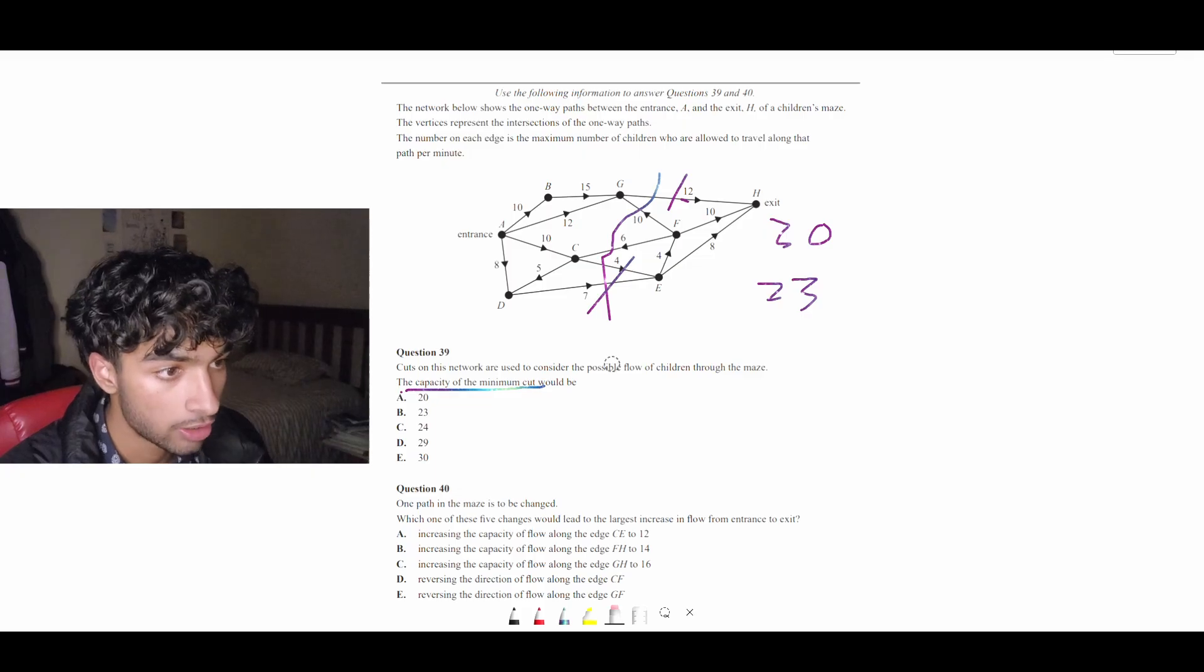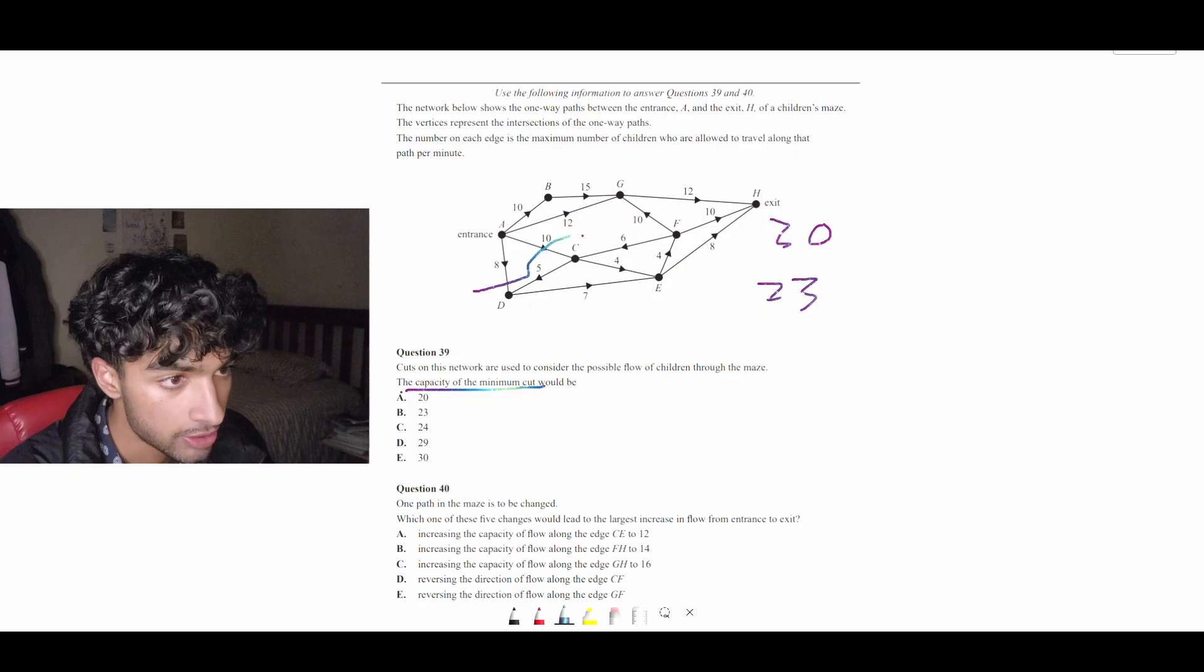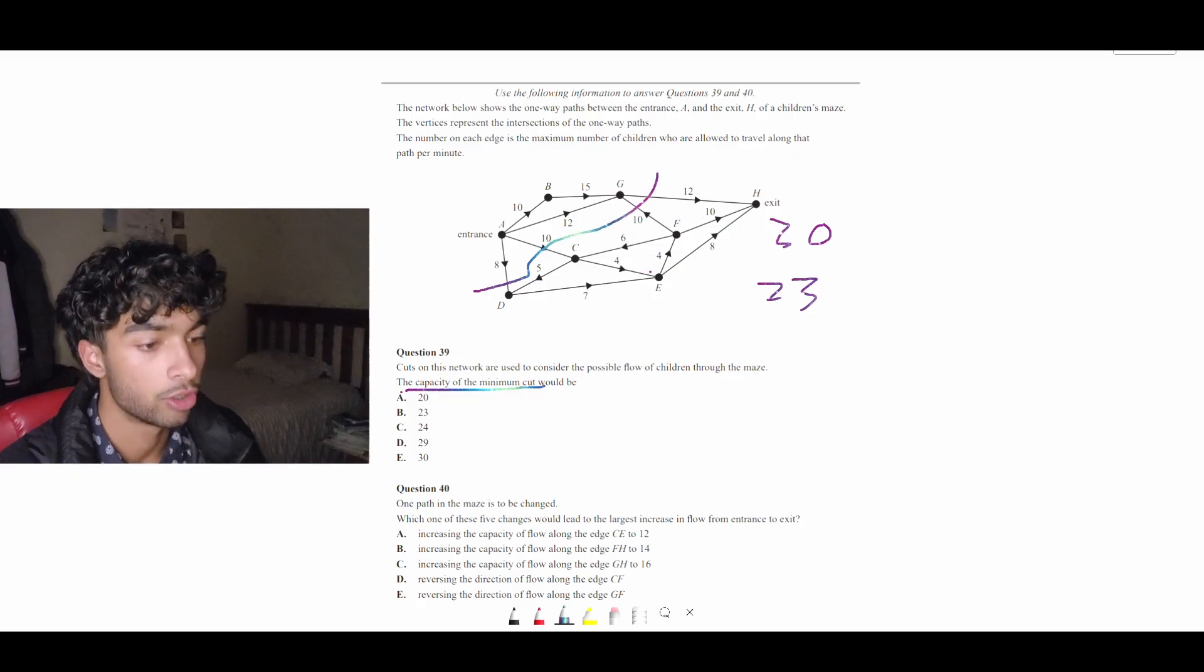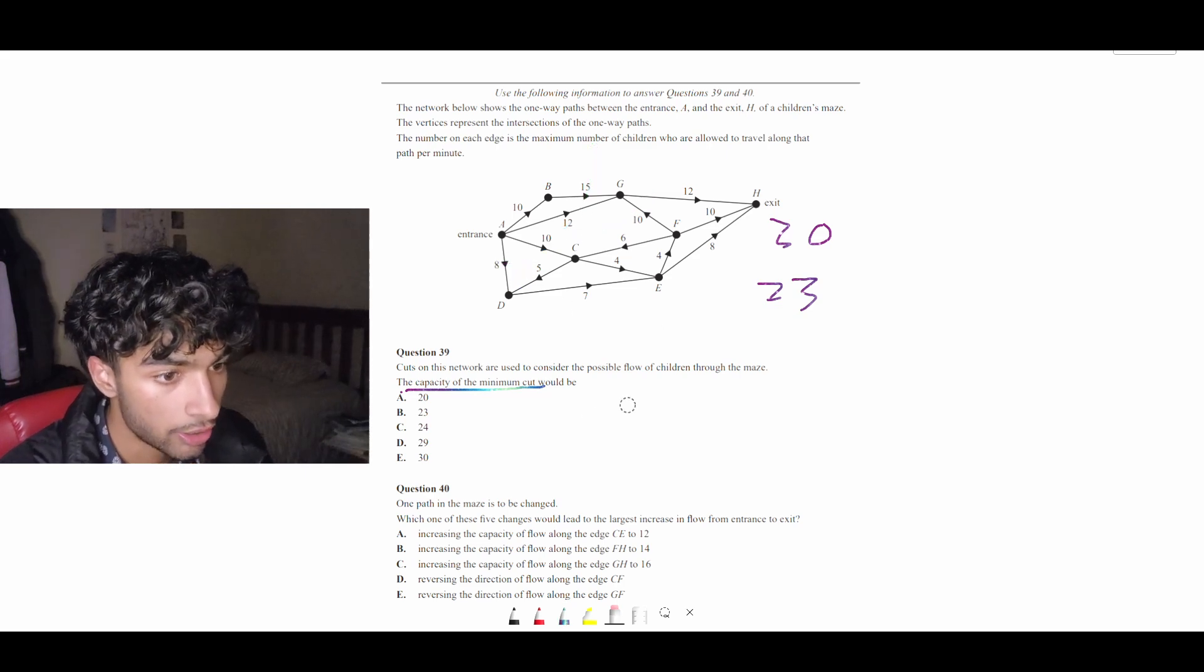And let me double check. 8 plus 10 plus 12 is also going to be 30. And then going here will give a massive cut. So the minimum cut is 23. So that is option B.